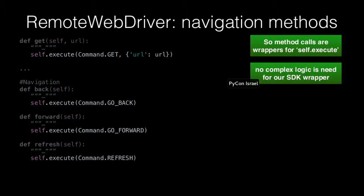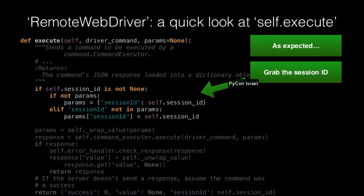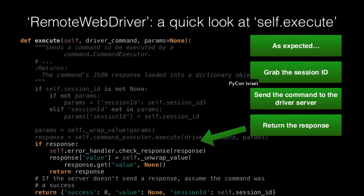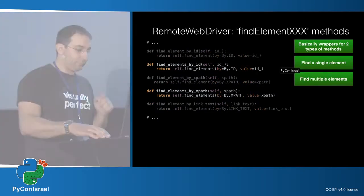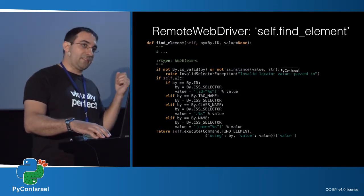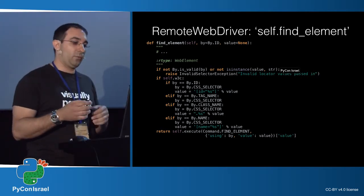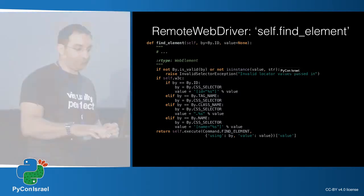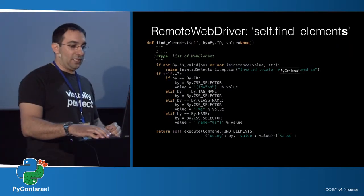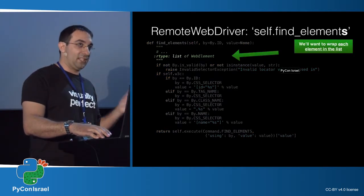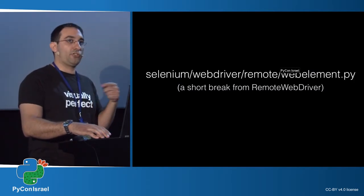We look at self.execute just to make sure — as expected, the first part gets a session ID for this automation session, gets the values and parameters, sends them to the executor, and gets the response. The second type of commands are the find element variants. These commands also look very thin — they all call some kind of find element or find elements function. The find element function again calls execute with the type of how to find an element, whether it's ID, CSS selector, etc. What we want to do is wrap the element so that once you get a click or send keys on the element, we can record that.